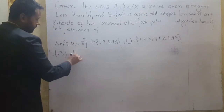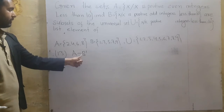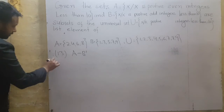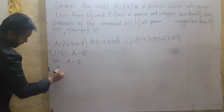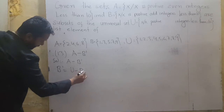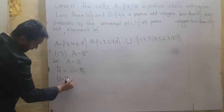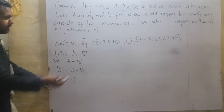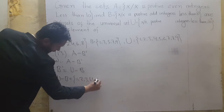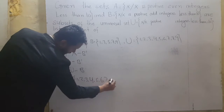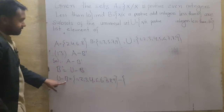Question number 13: A difference B complement. To solve this problem, we reference set A. Solution: B complement equals universal set minus set B, i.e., U minus B. The universal set U has elements {1, 2, 3, 4, 5, 6, 7, 8, 9}.